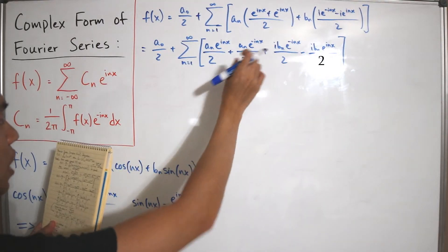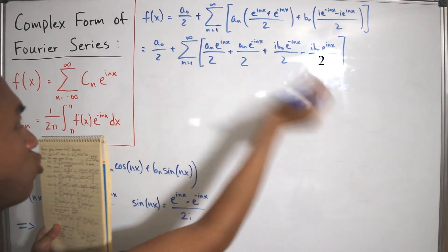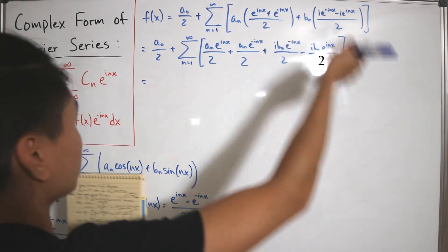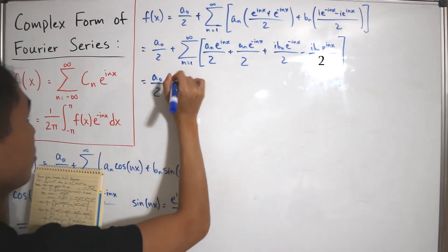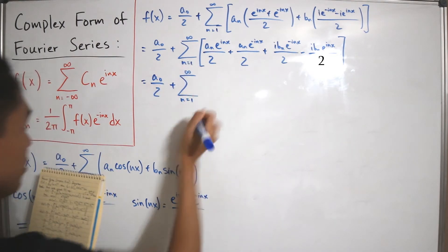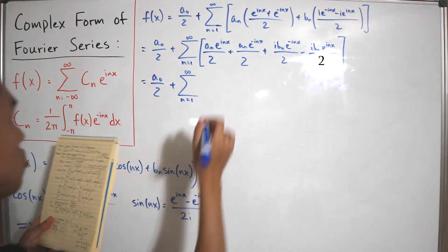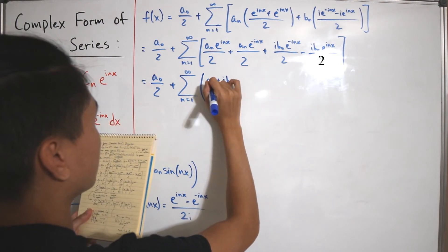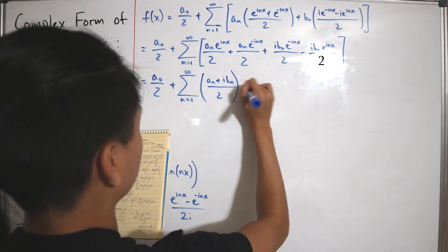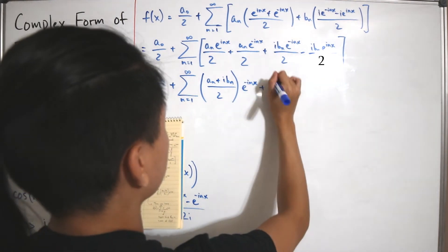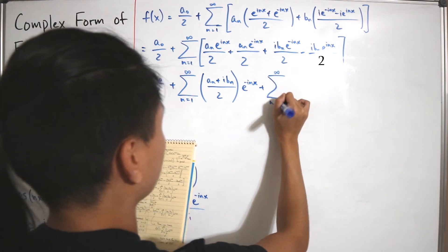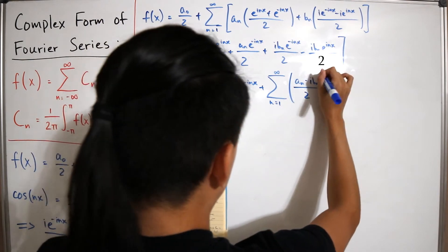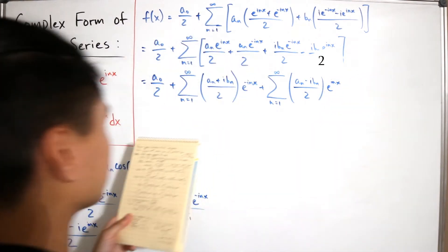We can factor and group terms sharing the same exponential. After applying linearity and factoring, we get the infinite sum of: [(a sub n plus i times b sub n) divided by 2] times e to the negative i times n times x, plus another infinite sum of: [(a sub n minus i times b sub n) divided by 2] times e to the positive i times n times x.